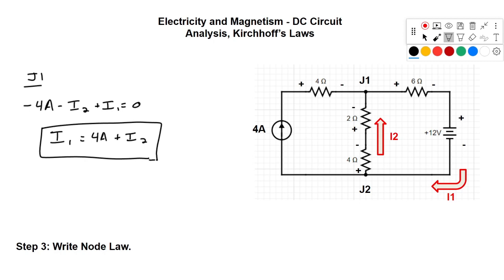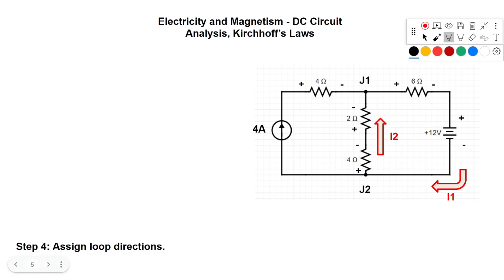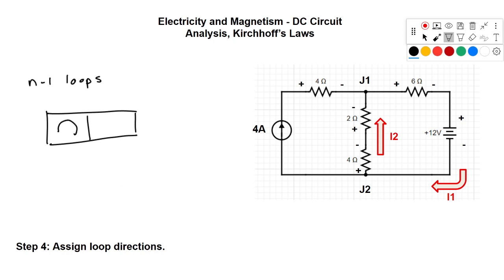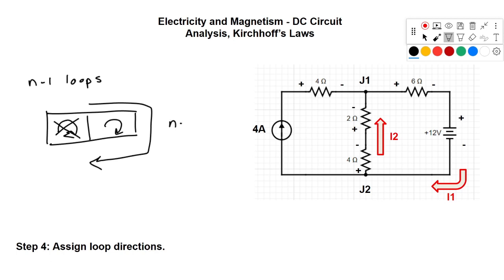Looking at the second junction gives the same result — I1 comes in, and I2 and the 4 amps go out. Now we assign loop directions. We need n minus 1 loops. We could draw a loop on each side and one around the entire circuit, but the left-hand loop has only a current source and no voltage source. Since we're applying Kirchhoff's Voltage Law, loops must contain a voltage source, so we can't use that left loop. That means n equals 2 loops total, and n minus 1 is just one.